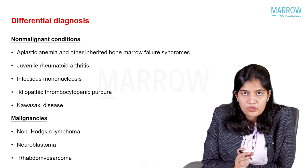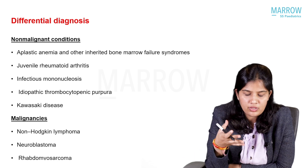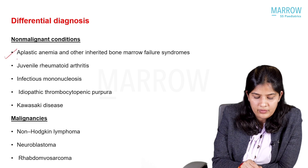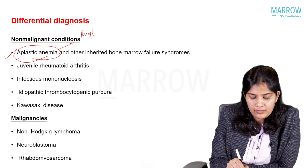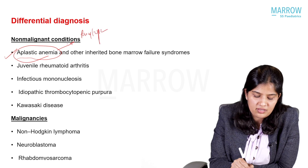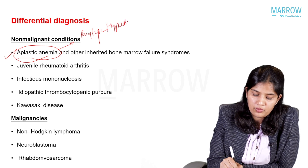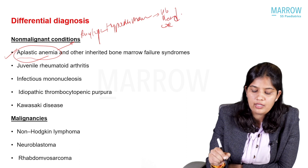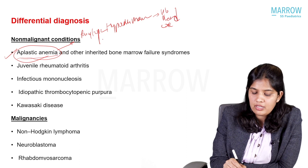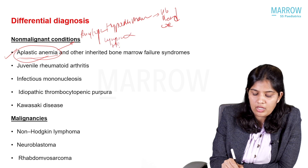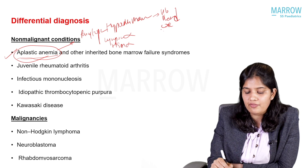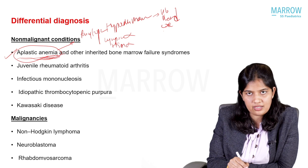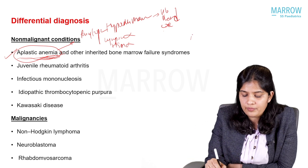Now coming to the differential diagnosis. Certain non-malignant conditions mimic the presentation of leukemia. Aplastic anemia presents with features of pancytopenia; the main pathophysiology is a hypocellular marrow not forming adequate cells, so the patient will have anemia, thrombocytopenia, and neutropenia. However, patients with aplastic anemia will not have lymphadenopathy or organomegaly, while patients with leukemia do. On bone marrow examination, aplastic anemia shows hypocellular or acellular marrow, whereas leukemia shows blasts in the marrow.